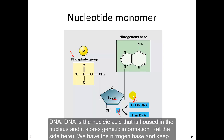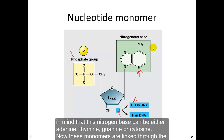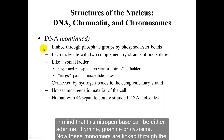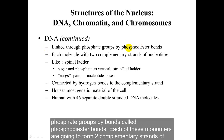DNA is the nucleic acid that is housed in the nucleus and stores genetic information. At the side here we have the nitrogen base, which can be adenine, thymine, guanine, or cytosine. These monomers are linked through the phosphate groups by bonds called phosphodiester bonds.